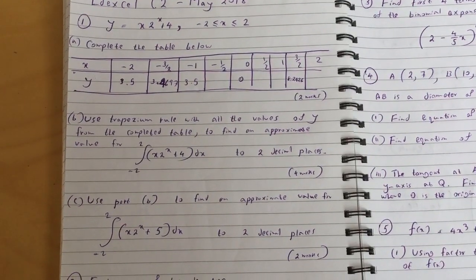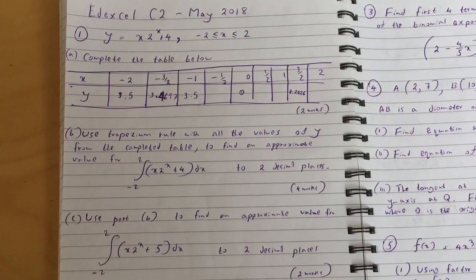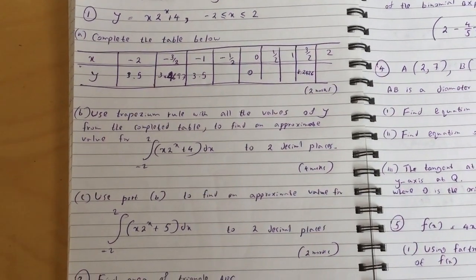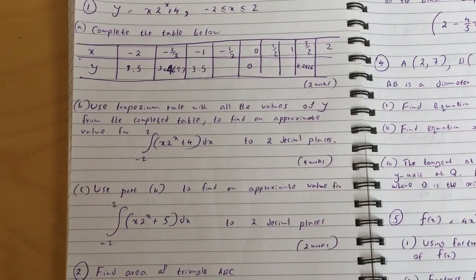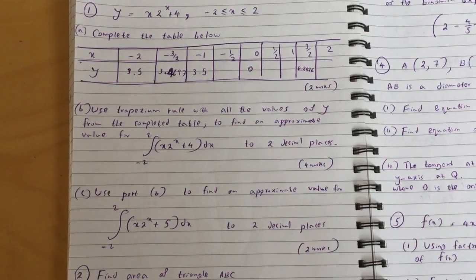So you've got to complete the empty columns. And part B: use trapezium rule with all the values of y from the completed table to find an approximate value for integral from minus 2 to 2 of x times 2 to the x plus 4 dx to two decimal places.